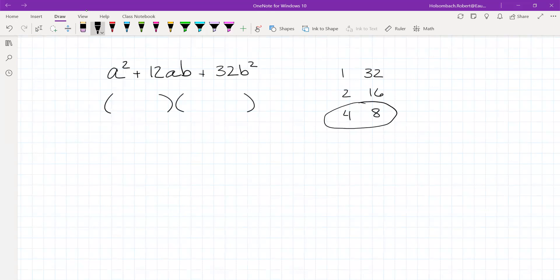So we've got... Everything's positive in this trinomial. When everything is positive, then both factors are going to be positive. So we're going to have a plus 4b times a plus 8b. Those are your two factors for this trinomial.